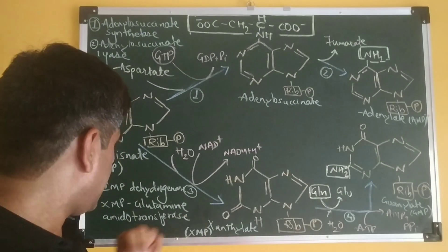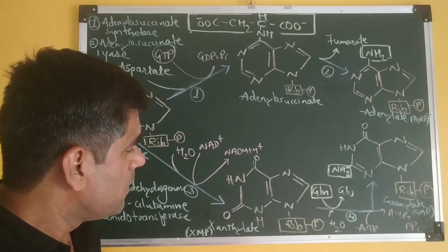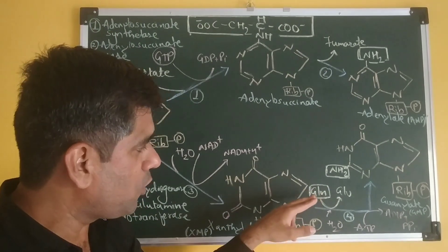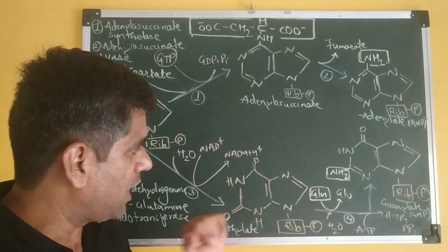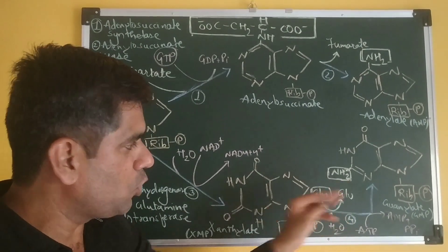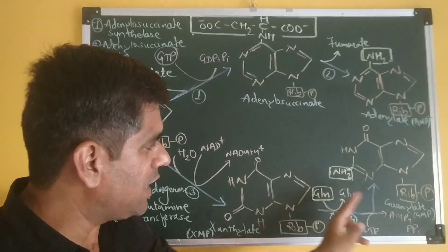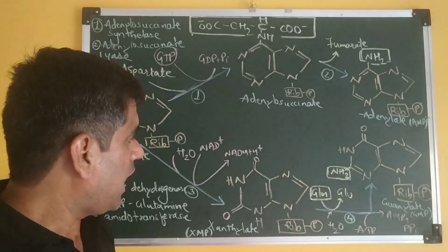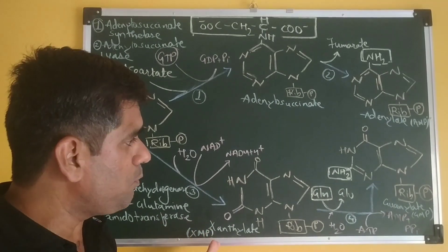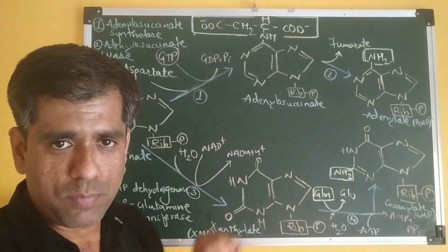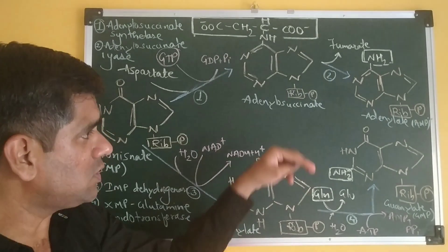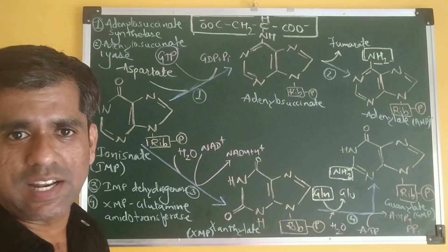In the next step, catalyzed by XMP glutamine amidotransferase, the amino group is transferred from glutamine. Glutamine is converted to glutamate. The energy required is provided by ATP, which is hydrolyzed to form AMP and PPi. Thus, XMP is converted to guanylate, that is GMP. We form both adenylate and guanylate from inosinate.